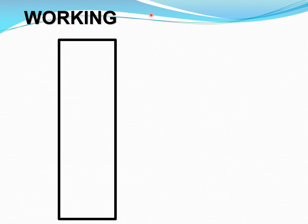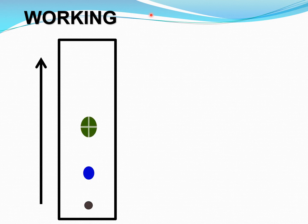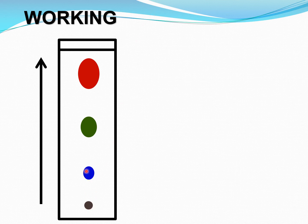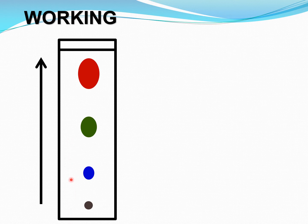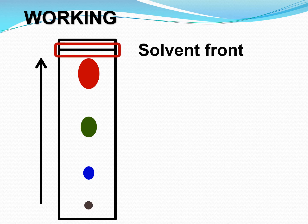When the mobile phase rises, the components get separated. At the top you can find a line — this is called the solvent front. The solvent moves from the bottom upward like a line, and you can observe and mark that line. It is called the solvent front.